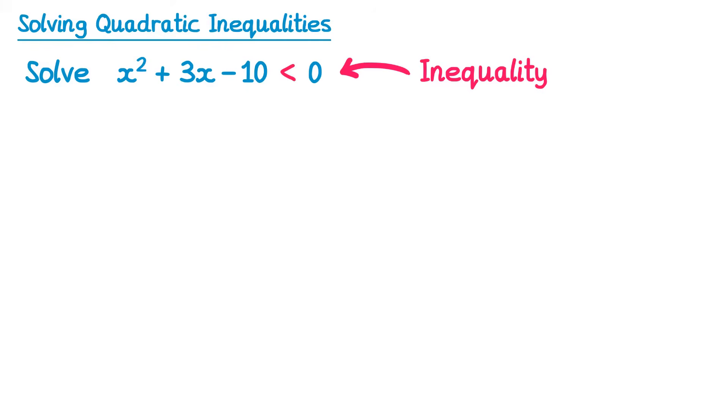It could have also been a greater than sign, or even less than or equal to, or greater than or equal to, but that's why it's an inequality. This on the other hand is a quadratic equation. It's an equation because it has an equal sign.